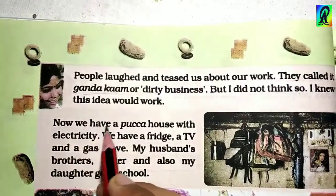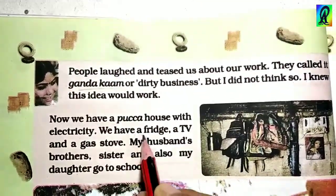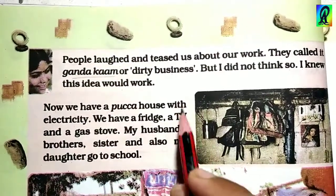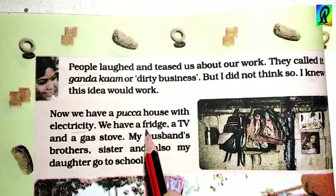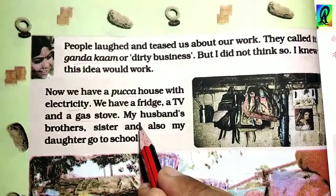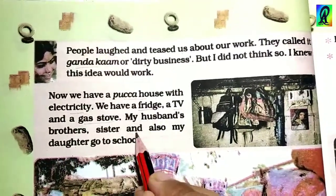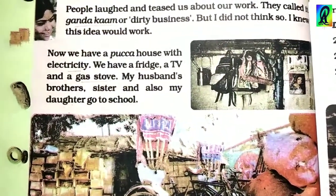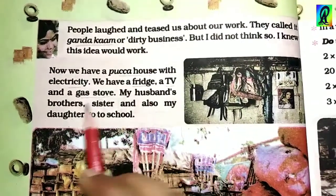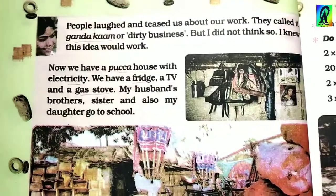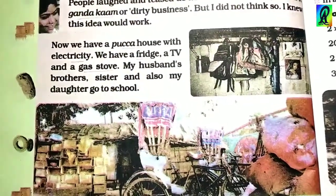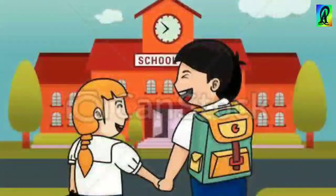Now we have a pucca house with electricity. We have a fridge, a TV and a gas stove. My husband's brothers, sisters and also my daughter go to school. As you can see, we have known that when they were married, they didn't go to school. So today they have all the things that they needed. You can see on the screen, I've tried to explain a pic through here. Now let's move on.